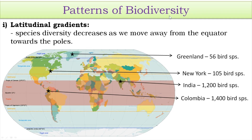The first pattern given in our textbook is latitudinal gradients. In latitudinal gradients, the pattern of distribution of biodiversity is such that species diversity decreases as we move away from the equator towards the poles. At the equatorial region, biodiversity or species diversity is high, and as we move away from the equator towards the poles, species diversity gradually decreases.